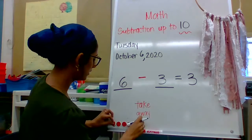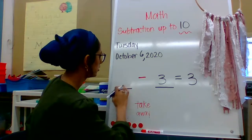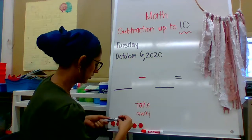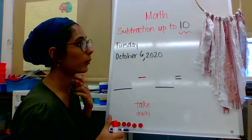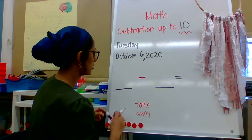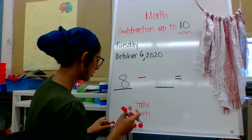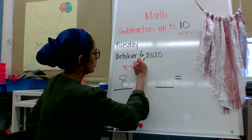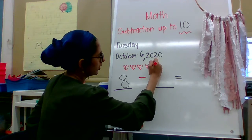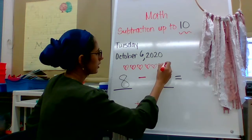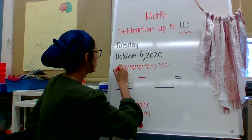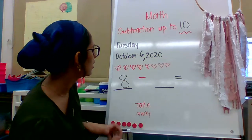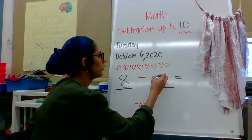Let's do another example. Let me draw a picture for this one. So what if I had eight hearts? Let's draw my eight hearts. Count with me and tell me when to stop — I want eight hearts. Write the number eight and let's start drawing. One, two, three, four, five, six, seven, eight. I have to stop. So I have one, two, three, four, five, six, seven, eight. Now I want to take away three.